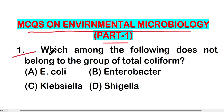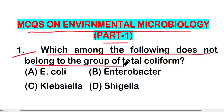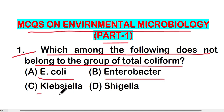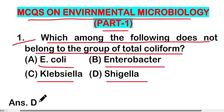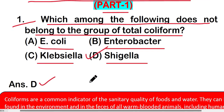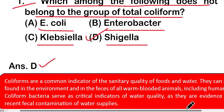The first question is: which among the following does not belong to the group of total coliform? Options are: option A - E. coli, option B - Enterobacter, option C - Klebsiella, option D - Shigella. The right answer is option D — Shigella is not a coliform bacteria.